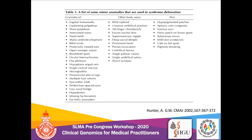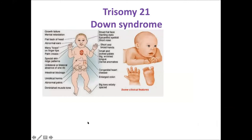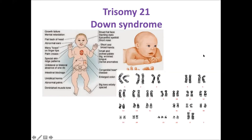This table helps determine the different minor anomalies seen in patients. A very commonly identified condition is Down syndrome, or Trisomy 21. These babies have a flat occiput, low-set ears, a single palmar crease, and widely spaced toes, along with systemic anomalies such as congenital heart disease and enlarged colon. Karyotyping is needed to confirm and to determine the inheritance pattern of Trisomy 21.